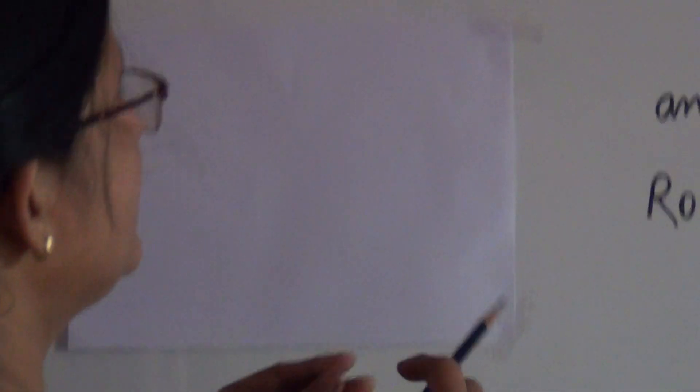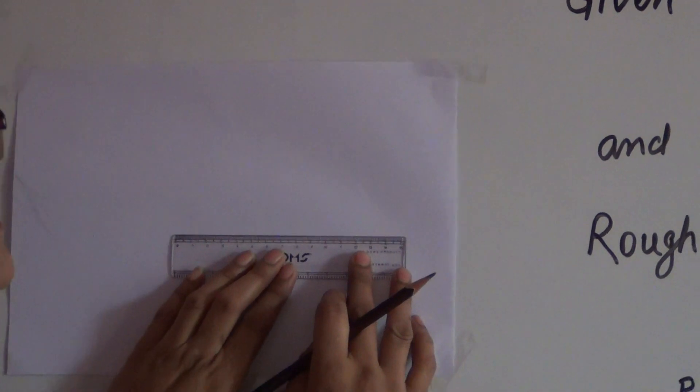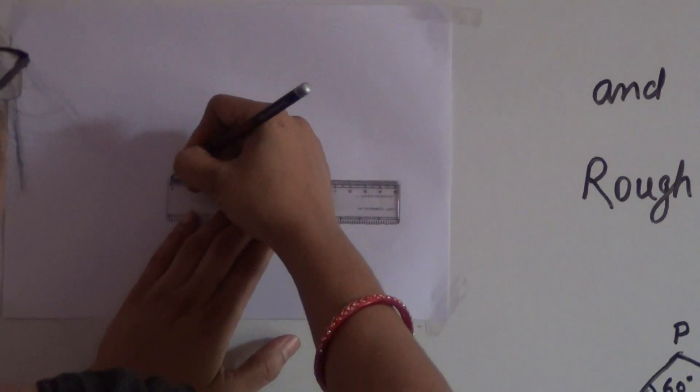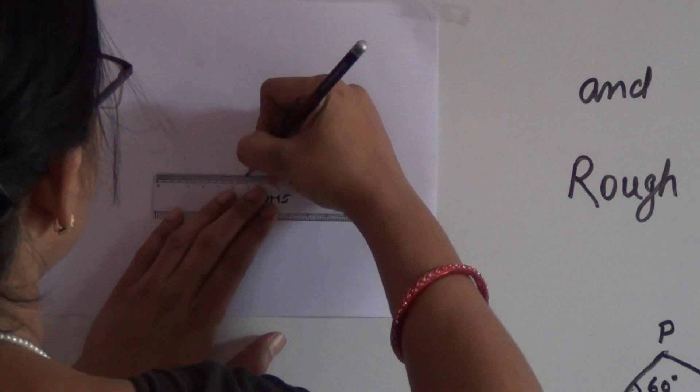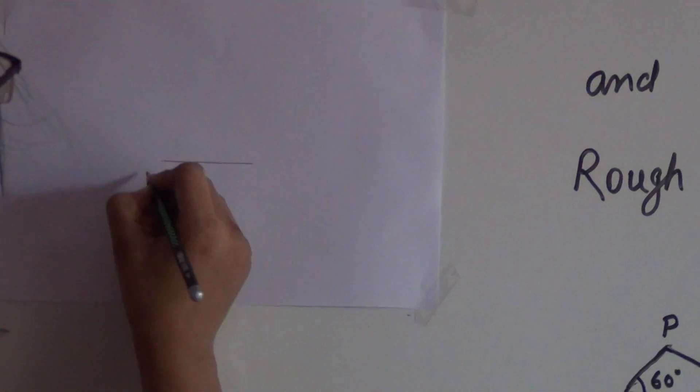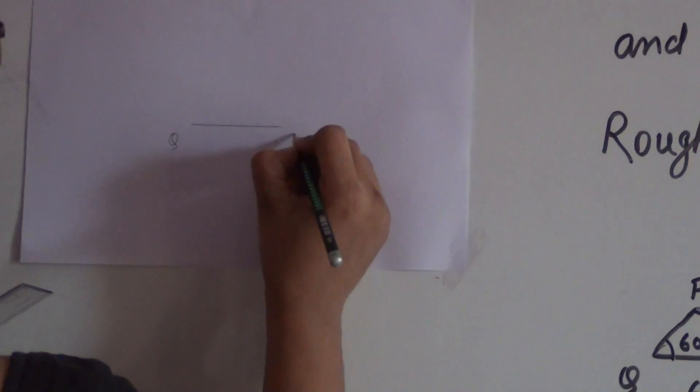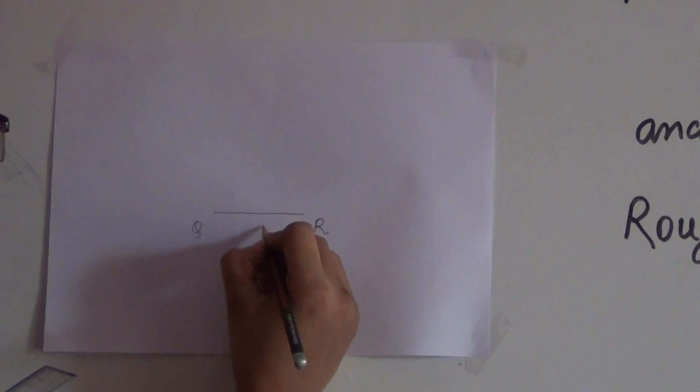First of all, we need to draw the base. Base is equal to 6 centimeters. Let us draw the line segment QR is equal to 6 centimeters.